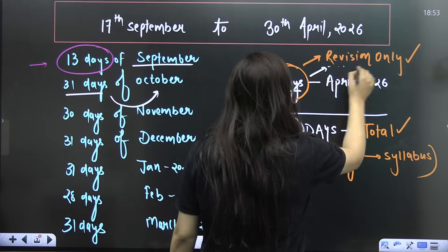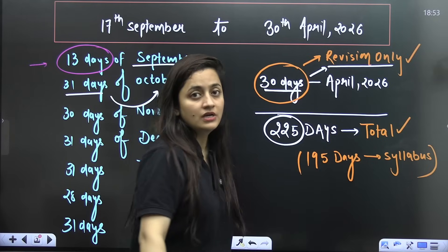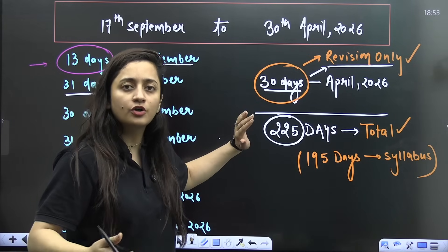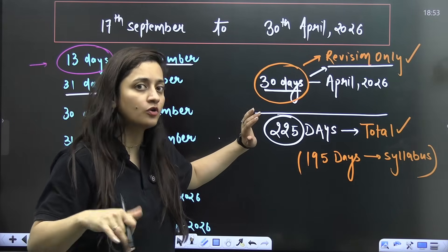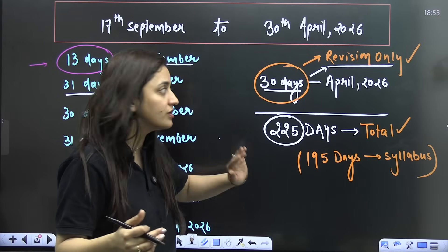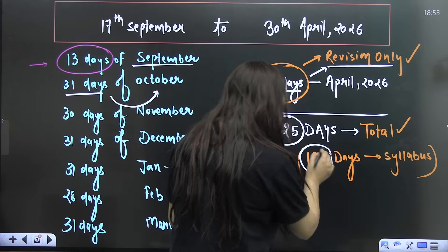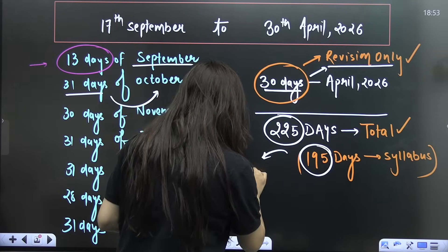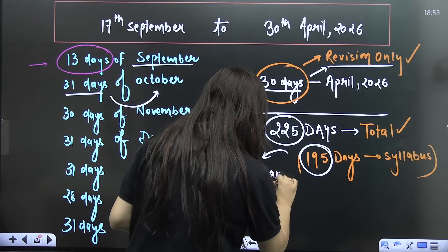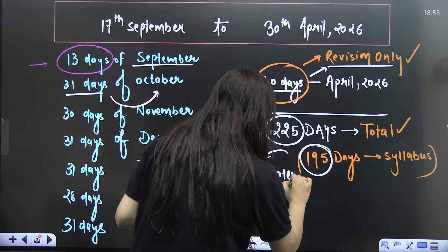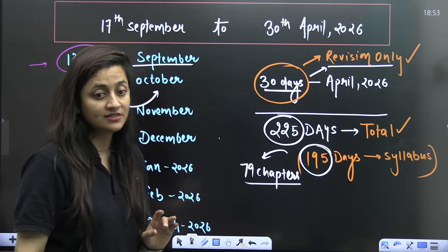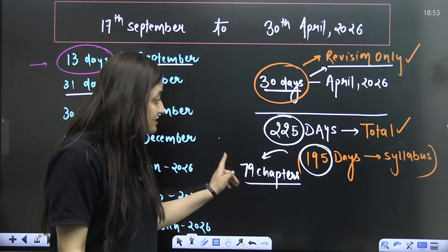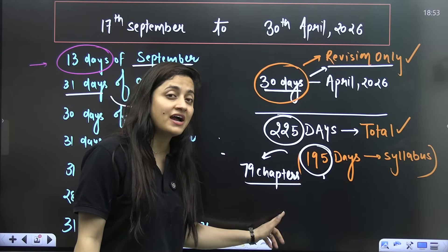Out of that, one month is just for revision. This is a time period where we cannot consider finishing extra topics or chapters. So we just have 195 days for the syllabus. We have 79 chapters — you can see 79 chapters, 195 days — that is not sufficient for us. So now it's time to use each and every day very wisely.